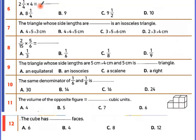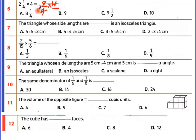Convert to an improper fraction: denominator stays 4, 4 times 2 is 8 plus 1 is 9, so it becomes 9 times 4. Simplify: 4 with 4 gives 1, so the answer is 9.